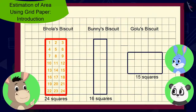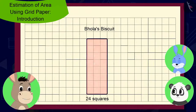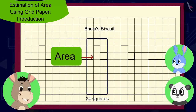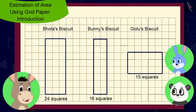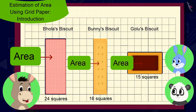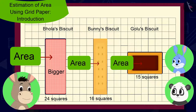'Absolutely right. And do you know that the space created inside the boundary of any shape is known as the area of that shape? So we can say that the area of my biscuit is larger than the area of both your biscuits, or my biscuit is bigger than both of yours,' Bhoola explained to Golu and Bunni.